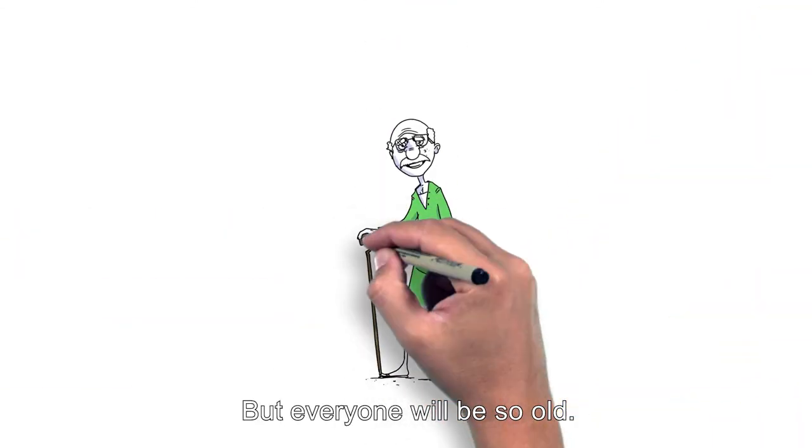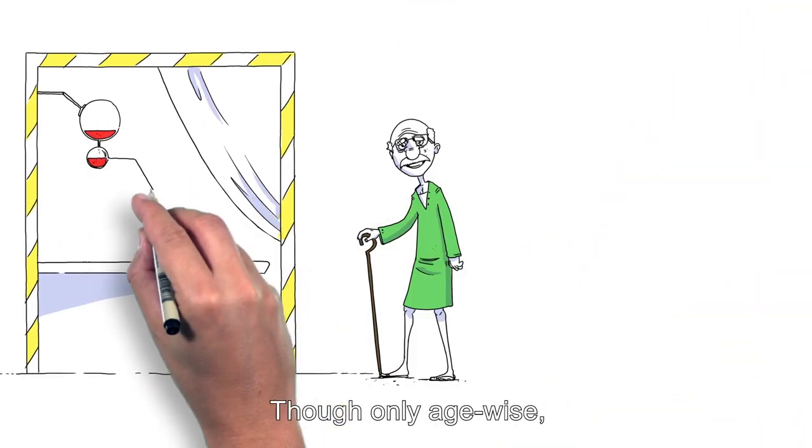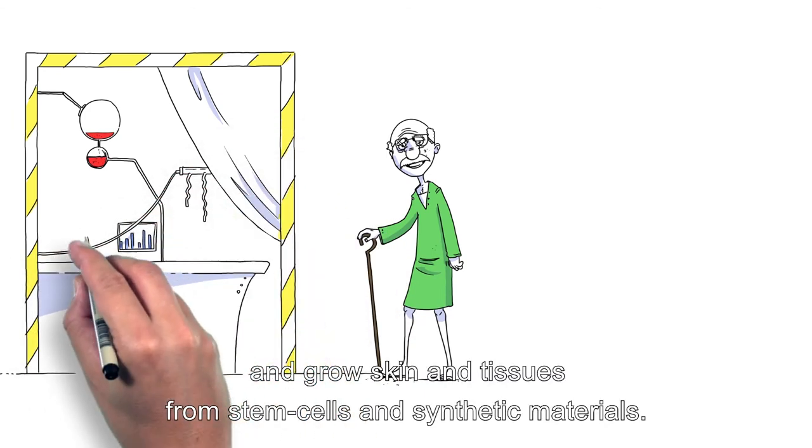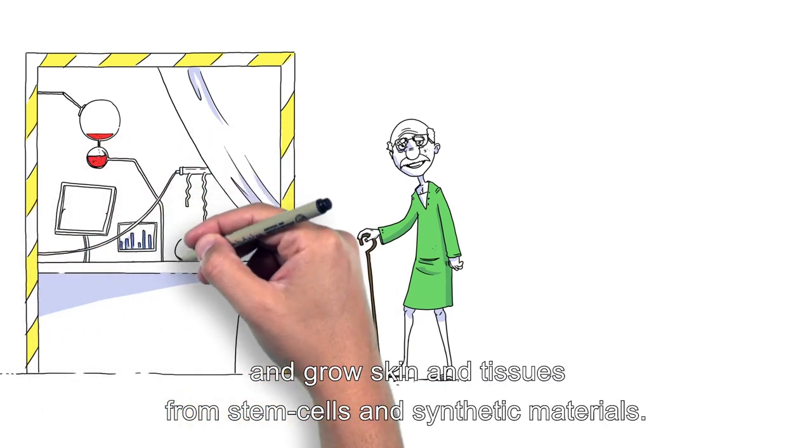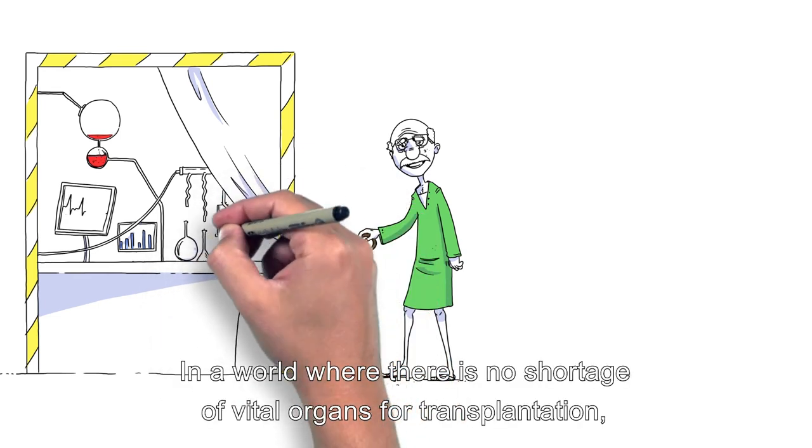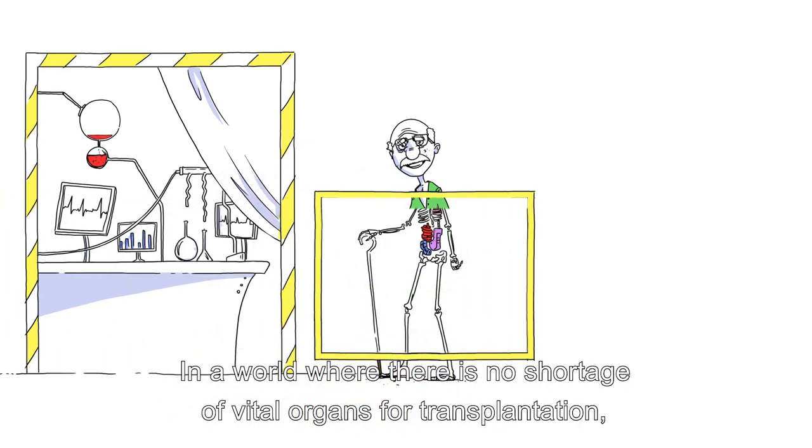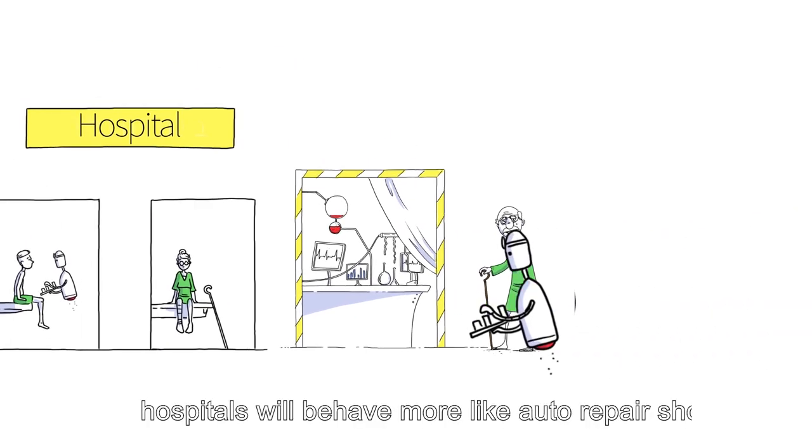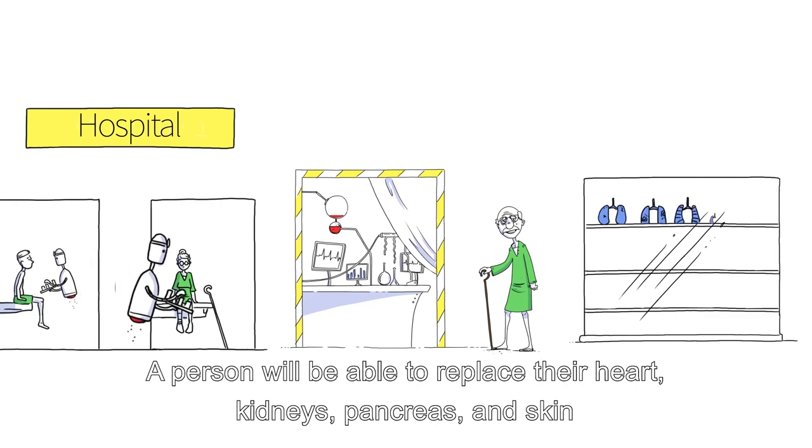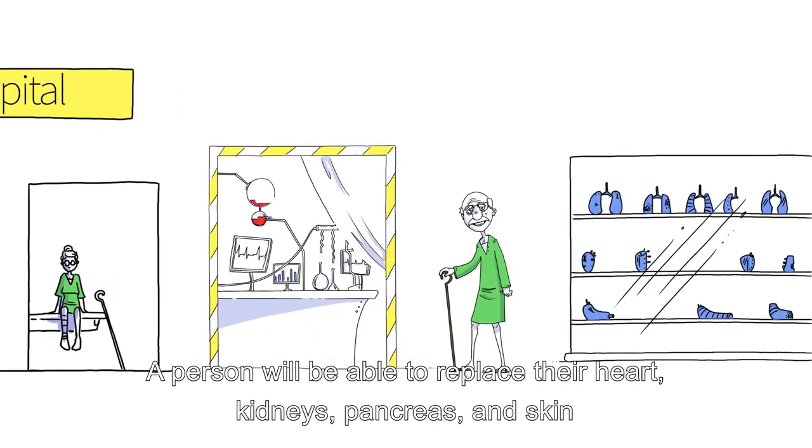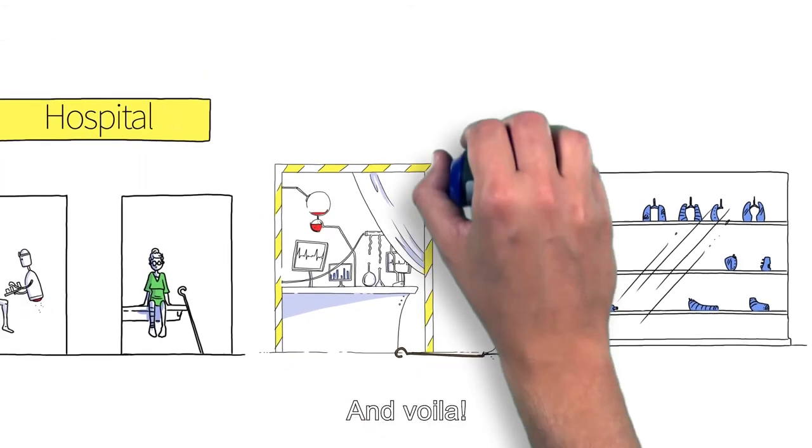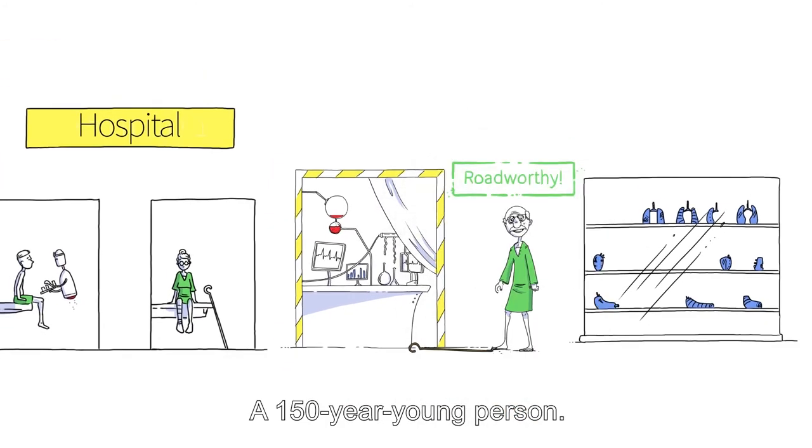But everyone will be so old! Though only age-wise, since we will soon be able to create human blood, and grow skin and tissue from stem cells and synthetic materials. In a world where there is no shortage of vital organs for transplantation, hospitals will behave more like auto repair shops. A person will be able to replace their heart, kidneys, pancreas and skin, with younger, even genetically enhanced models. And voila, a 150-year young person.